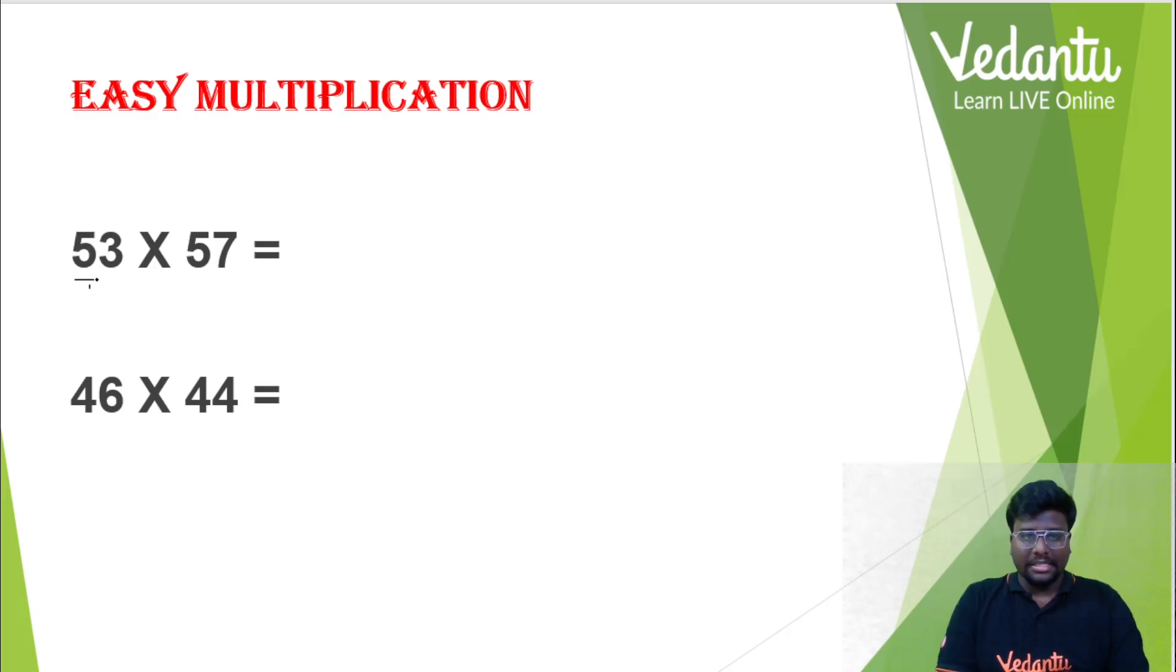Take a look at this. The numbers, the tens digits are same. Over here, the tens digits are same, right? And also take a look at this. The units digit, the units digit, 3 and 7 add up to 10. Correct? Come to the bottom number. The tens digit, the tens digit, they are same. Next thing, the unit digit and the unit digit will add up to 10 again.